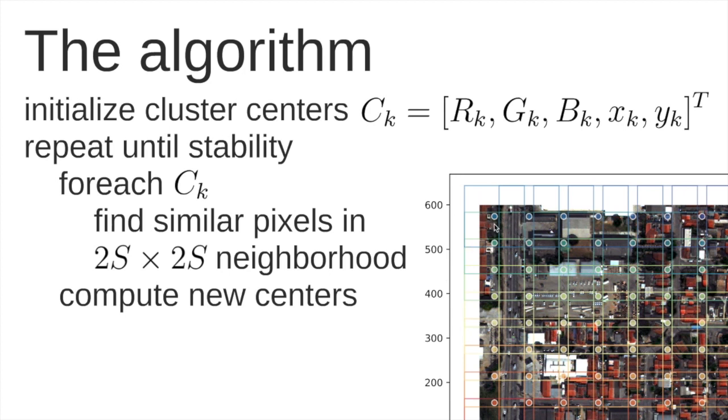And then, each cluster center will try to find the similar pixels only inside their specific neighborhoods. And then, the algorithm looks for new centers. So the idea is that these centers will navigate around this region here to define a proper center for all of the cluster centers here.